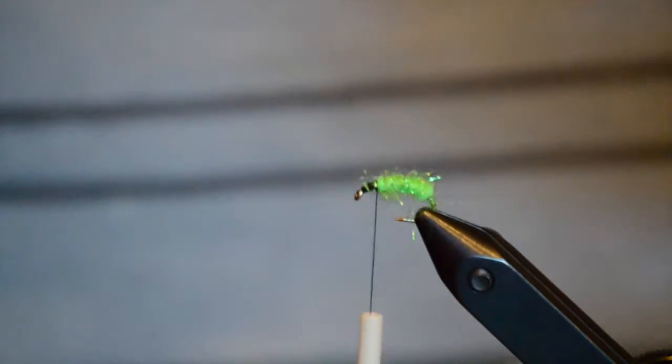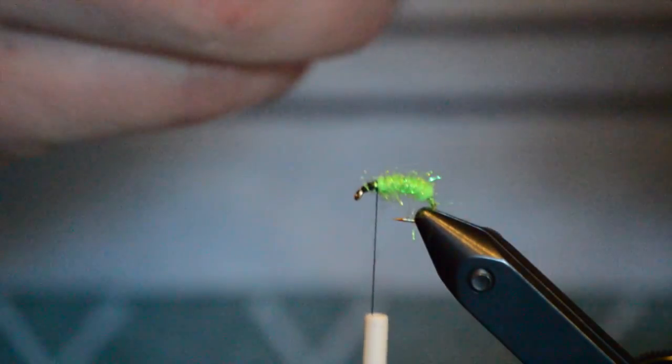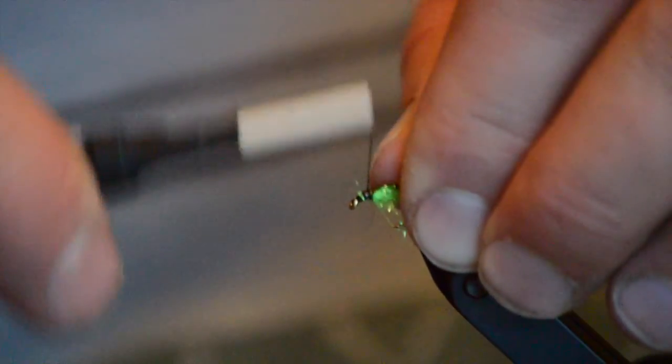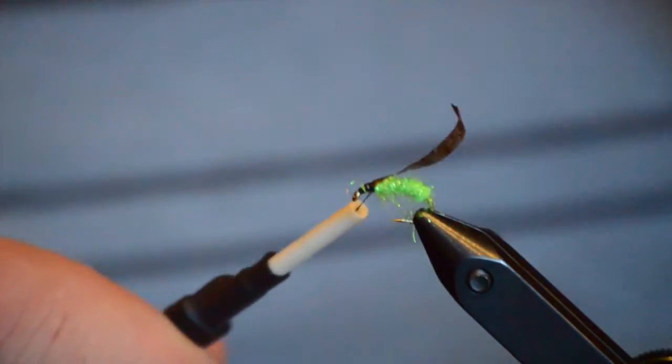So we'll clip off a thin strip and again we'll lay that in putting one soft wrap and then a few progressive tight wraps to make sure it's secure.